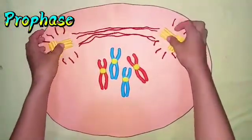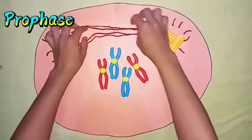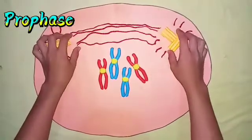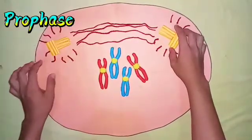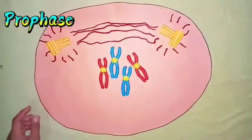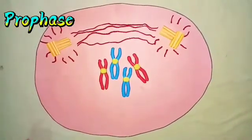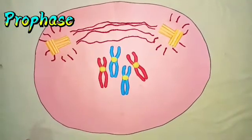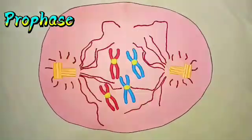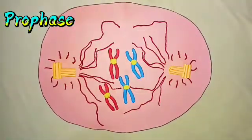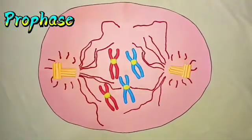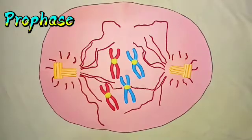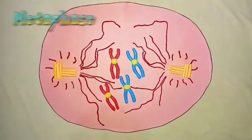Centrioles begin moving to opposite ends of the cell and fibers extend from the centromeres. Some fibers cross the cell to form the mitotic spindle. Now the cell will proceed to the second phase of mitosis, which is the metaphase.